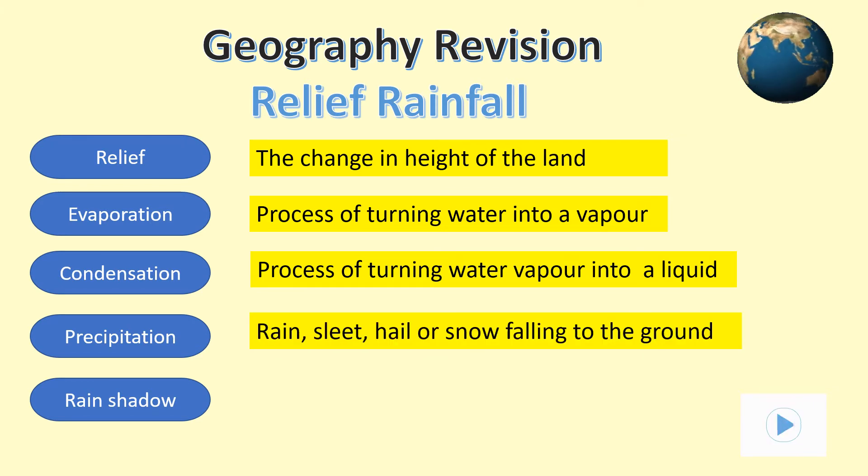The last key ingredient of the water cycle is precipitation. This is a technical term for rain, sleet, hail, or snow that is found falling through the atmosphere towards the ground.